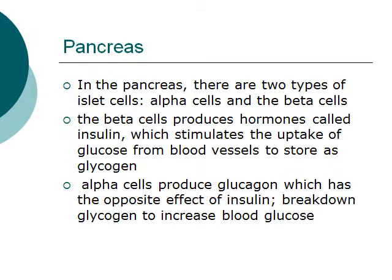In the pancreas, there are two types of islet cells: alpha cells and beta cells. The beta cells produce a hormone called insulin, which stimulates the uptake of glucose from blood vessels in order to store it as glycogen. Alpha cells produce glucagon, which has the opposite effect of insulin, where it is responsible for breaking down glycogen to increase blood glucose.